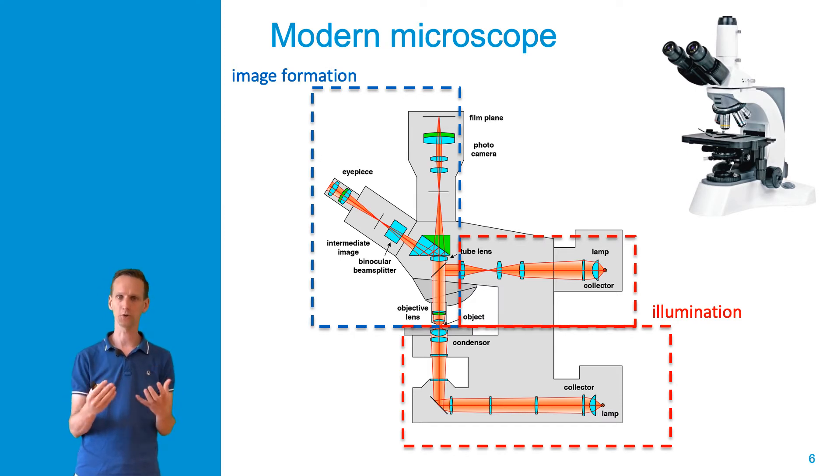Here is a cut through depicting the lens system in such a system. We can basically divide the lens systems into two parts. One part depicted in blue is necessary for the image formation, and another part depicted in red is needed for illumination.